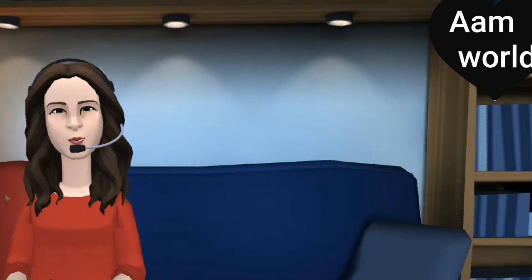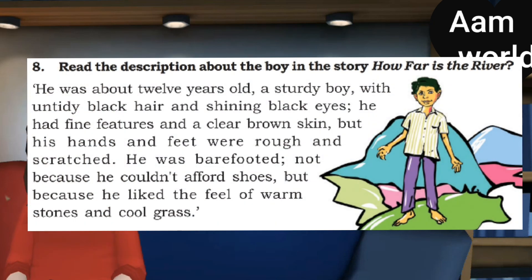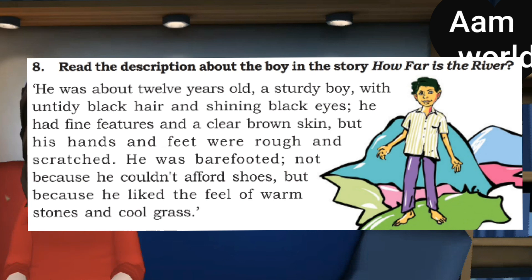Now let's get to activity 8. Activity 8: Read the description about the boy in the story 'How Far is the River?' They have given a description about the boy. Let's read: 'He was about 12 years old, a sturdy boy with untidy black hair and shining black eyes. He had fine features and a clear brown skin, but his hands and feet were rough and scratched. He was barefooted, not because he couldn't afford shoes, but because he liked the feel of warm stones and cool grass.' This is the description given about the boy.